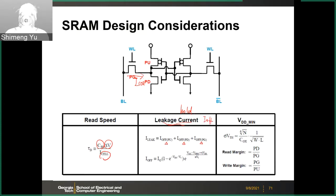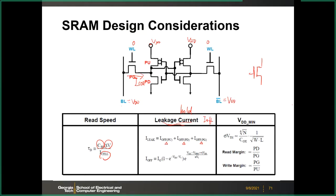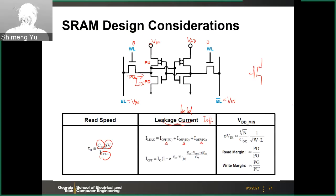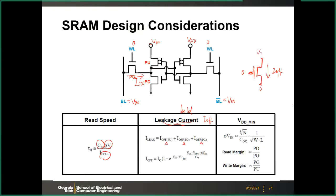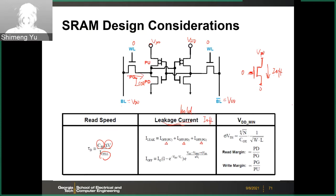During hold mode the word line is zero, VDD is present, and BL and BL-bar are pre-charged to VDD. The subthreshold leakage I_off is non-zero for these transistors. Leakage is a major power consumption issue in low-power platforms like smartphones — most power during sleep mode is consumed by SRAM cache leakage, which is why the battery drains even when no apps are running.